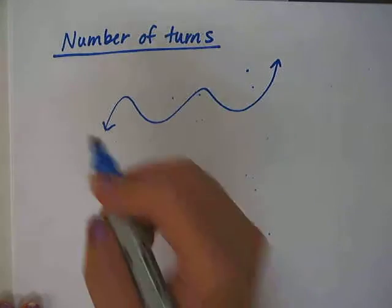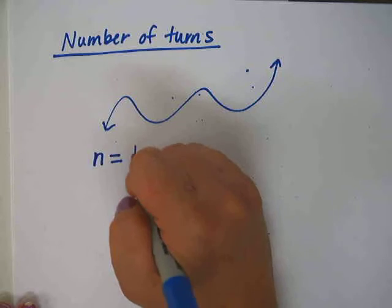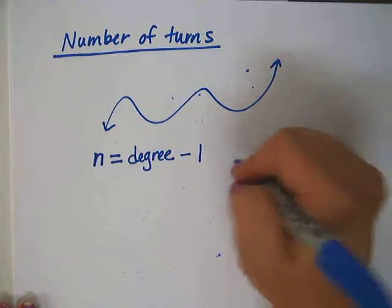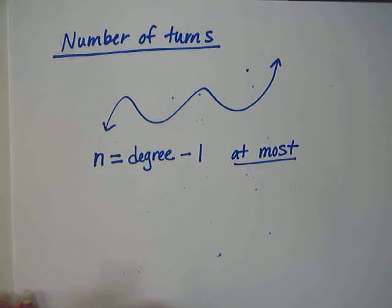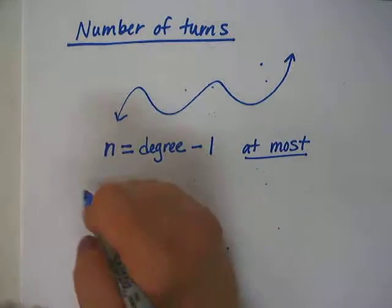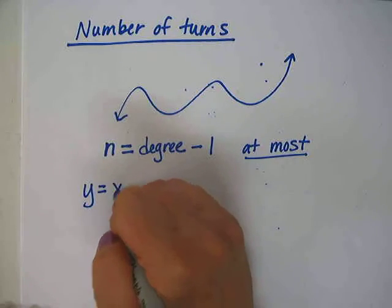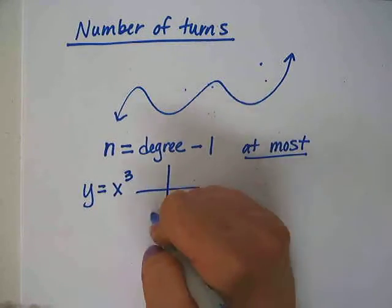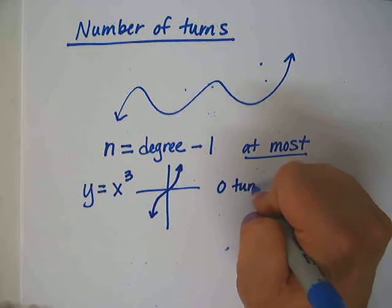The rule for the number of turns is that the number of turns will be the degree of the function minus 1 at most. If you have a graph that's degree 3, that graph without anything else added to it will actually have 0 turns.